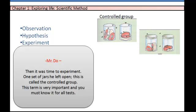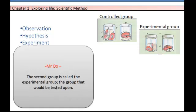Then it was time to experiment. One set of jars he left open. This is called the control group. This term is very important and you must know it for all tests. The second group is called the experimental group, the group that would be tested upon.